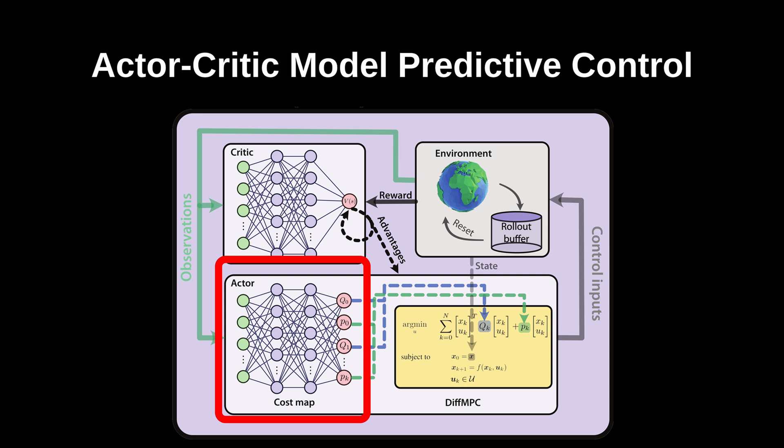The second component of our actor is the cost map, a deep neural network that encapsulates the dependencies between observations and the cost function of the MPC.